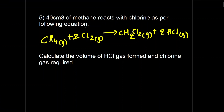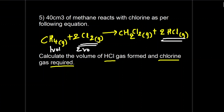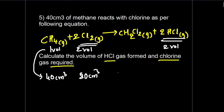Next: 40 cm³ of methane reacts with chlorine as per the equation CH4 + 2Cl2 → CH2Cl2 + 2HCl. All these are gases. Calculate the volume of HCl gas formed and chlorine gas required. From the equation: 1 volume of CH4 requires 2 volumes of Cl2 and produces 2 volumes of HCl. So 40 cm³ of methane requires 80 cm³ of chlorine and forms 80 cm³ of HCl.